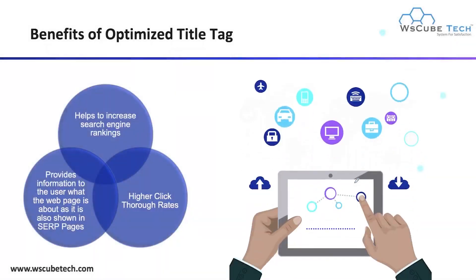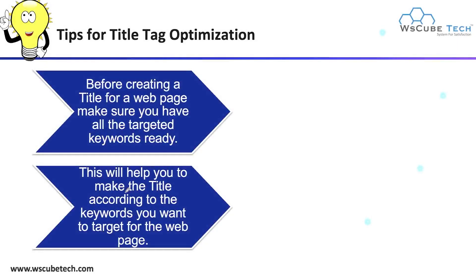The next thing we have is the benefit of optimizing your title. If you optimize your title tag, it helps to increase search engine ranking. It results in a higher click-through rate because if your title is eye-catching it can attract users to your website, as your title tag explains a little about your website content and is shown in the search engine result page.